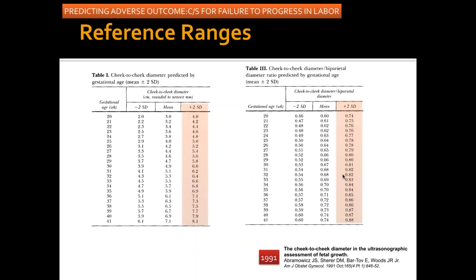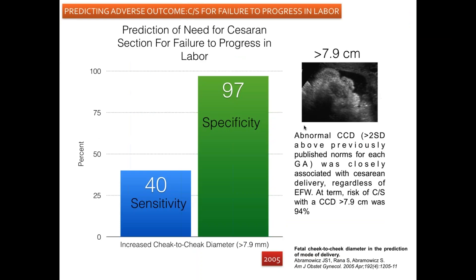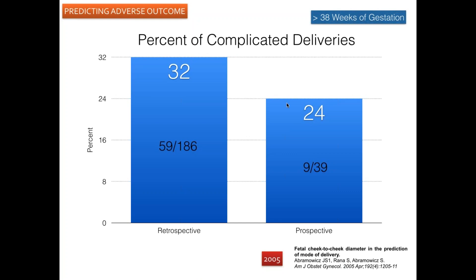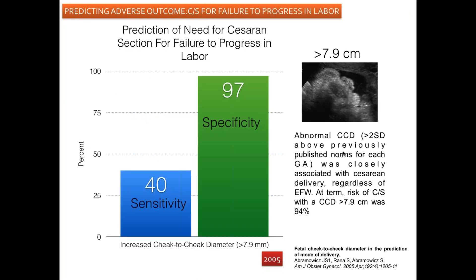Here are the ratios used based upon gestational age, set at two standard deviations above the mean. The study looked at retrospective and prospective groups. They ultimately found that a cheek-to-cheek diameter more than 7.9 centimeters was closely associated with increased risk for cesarean delivery regardless of estimated fetal weight. At term, the risk for cesarean section with a cheek-to-cheek diameter greater than 7.9 centimeters was 94%. It had 40% sensitivity but 97% specificity for detecting fetuses requiring C-section for failure to progress in labor — a very simple tool to consider.